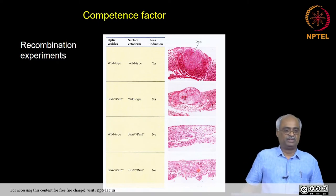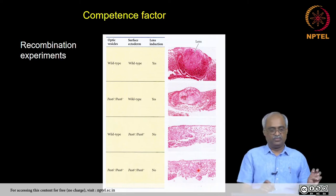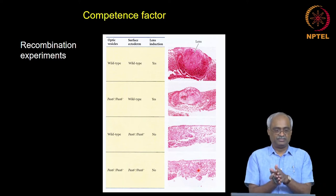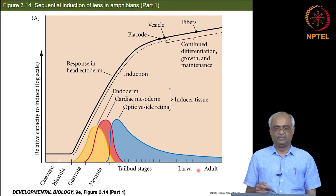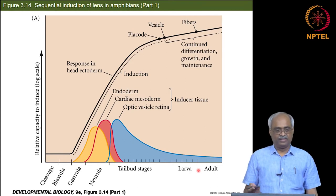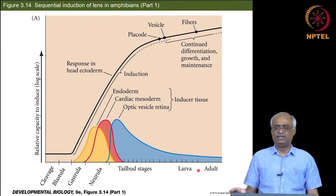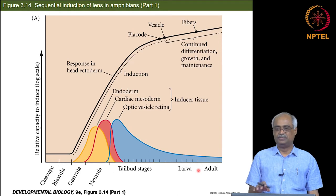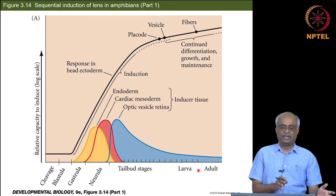This is how you establish competence factors. You take surface ectoderm from one genotype and the optic vesicle from another genotype and put them together. These are skills learned working with developmental biologists using frog, mouse, chick, etc. These transplantation experiments are fairly straightforward — people readily do them. Moving further into the rules that govern induction and competence: the inducer does not remain an inducer forever, and the responder does not remain competent for that inductive signal all the time.